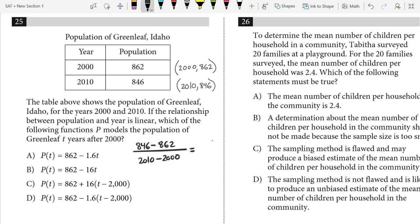So on 25, it says the relationship between population and year is linear. Therefore, we're looking for an answer that's in slope-intercept form. Well, C and D are not in slope-intercept form, so those are immediately out. We're picking between A and B now.